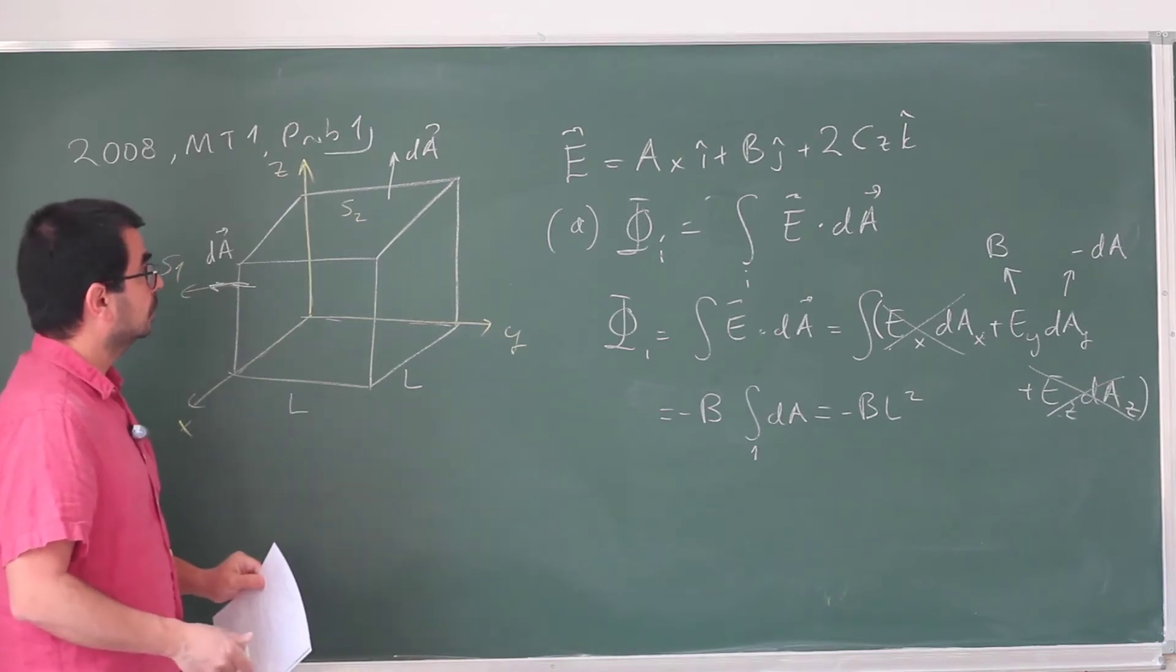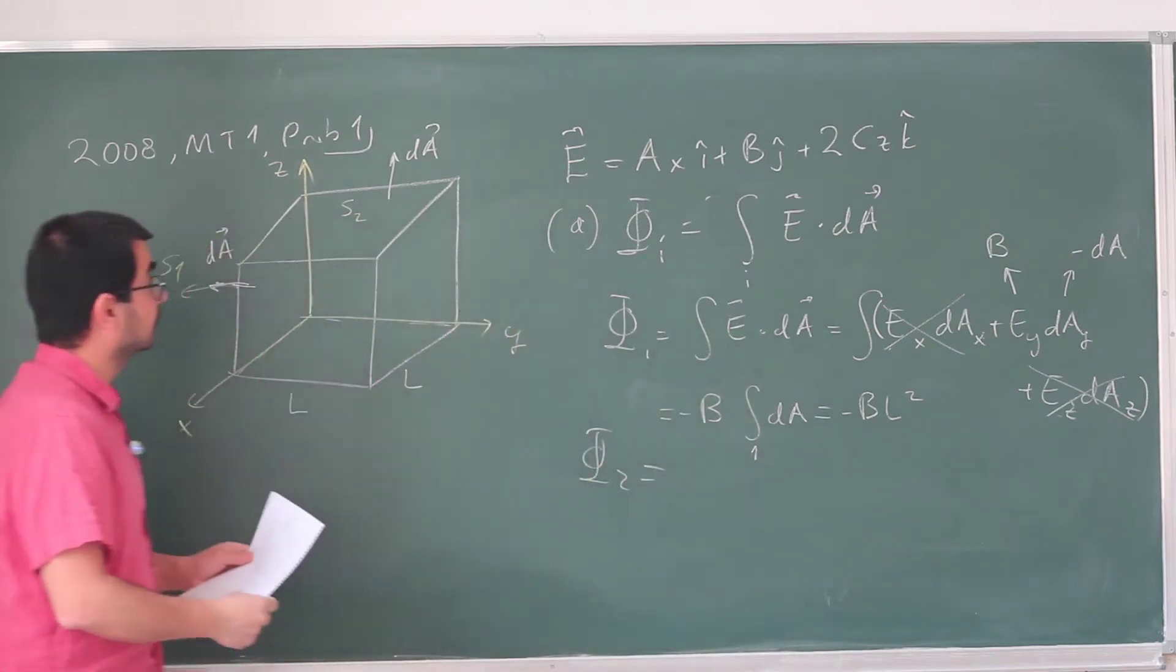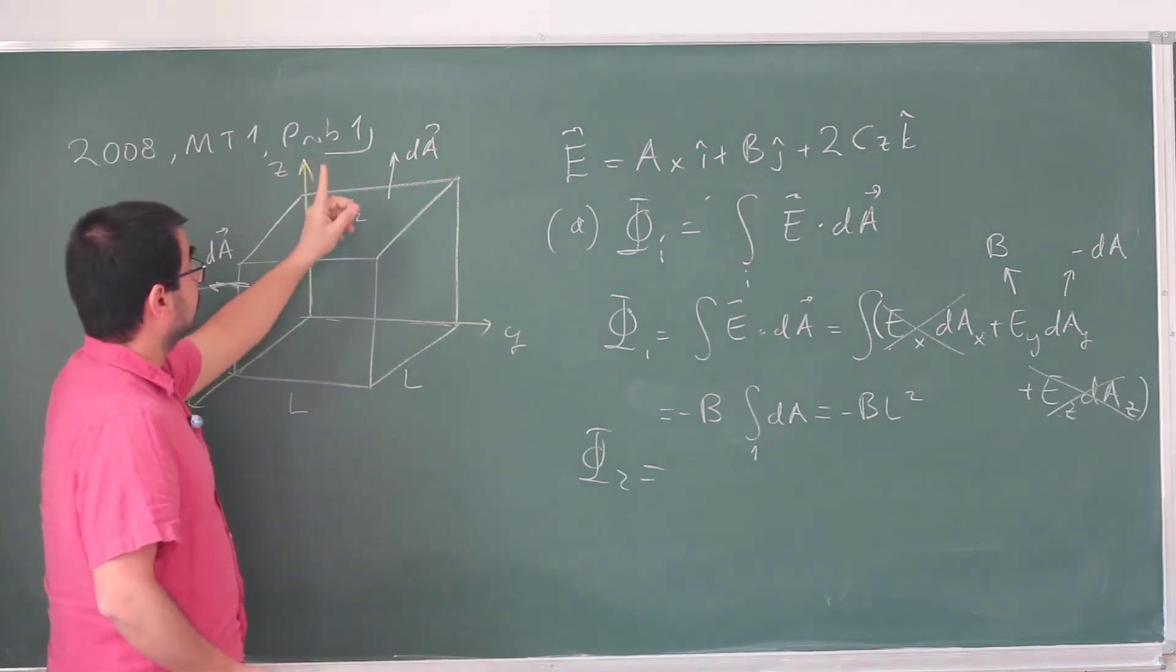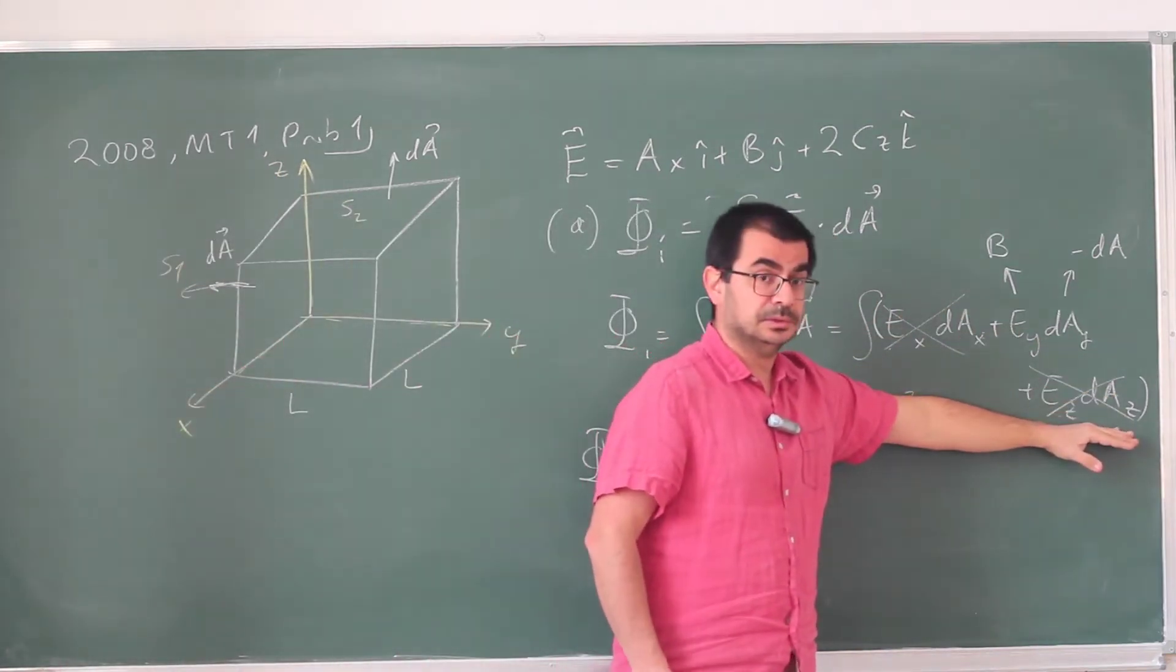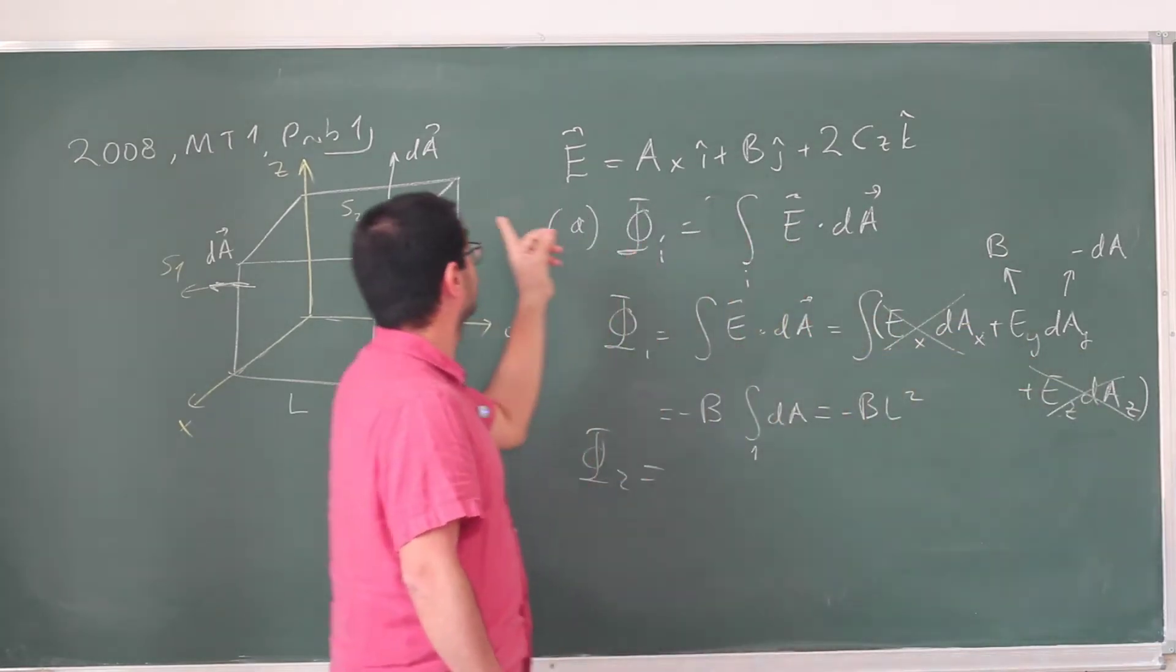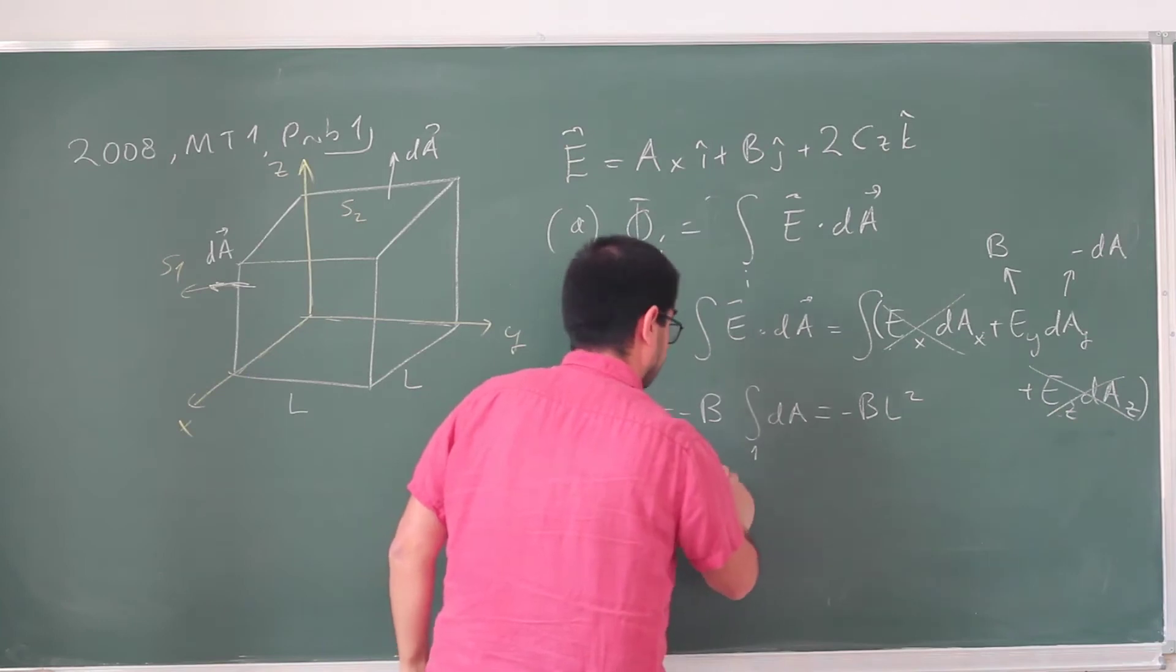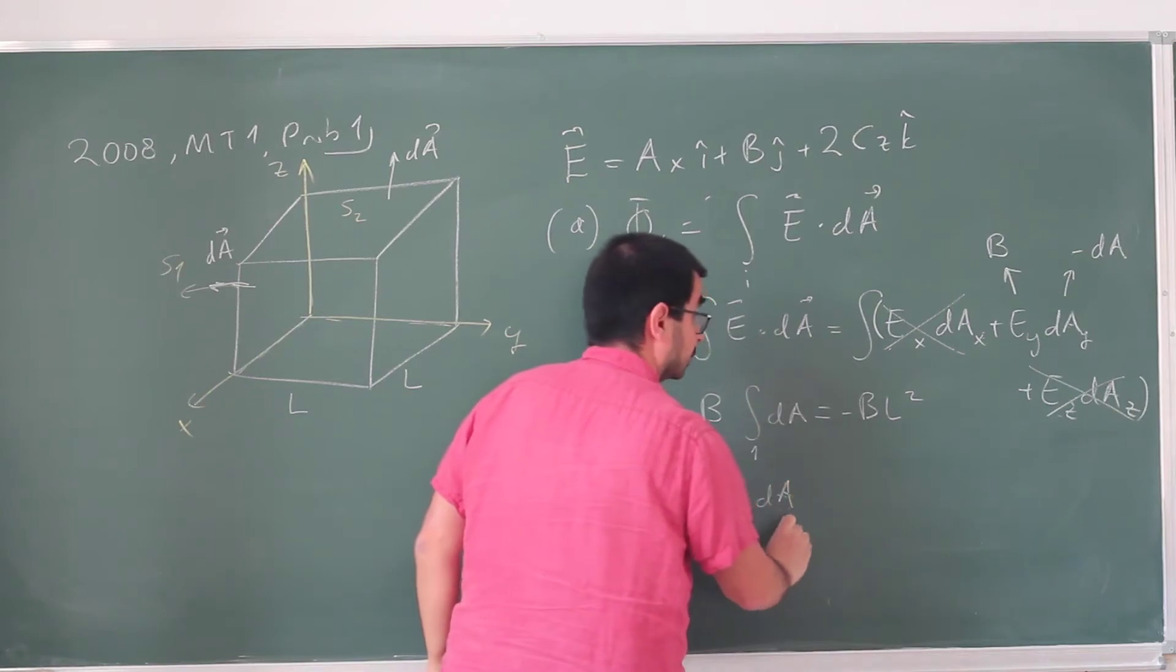Just to carry you a little bit further, let's calculate phi 2, flux through the second one. Here, dA is purely in the z direction. So again, you take this dot product. Everything but the third term is going to vanish because dAy and dAx for this face is just zero.